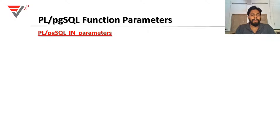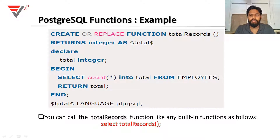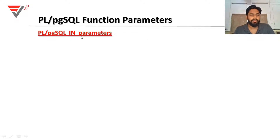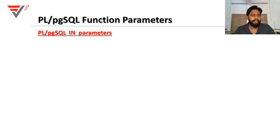So in PL/pgSQL, there are parameters. In the previous slide, 'total_record' — we can't pass any parameters in the bracket. If we pass a parameter, there are different types. We can define the IN parameter. By default, the parameter is IN or OUT.